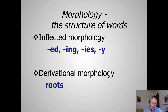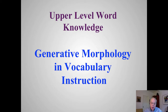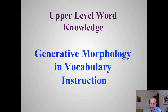We're looking at morphology in these two stages. During the syllables and affixes stage, we're looking at inflective morphology, and during derivational relations, we're looking at derivational morphology. Upper-level word knowledge — we want people to think about generative morphology in vocabulary instruction, and I'll show you what that means.